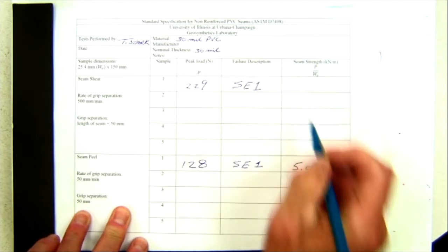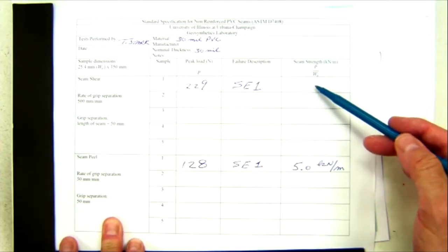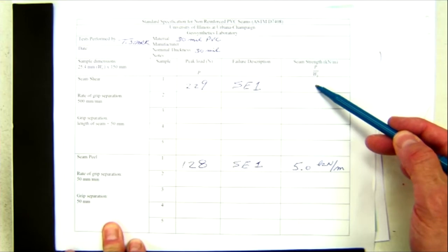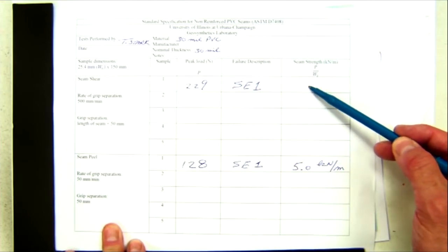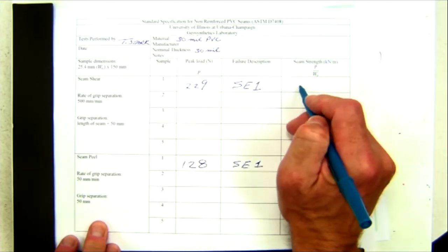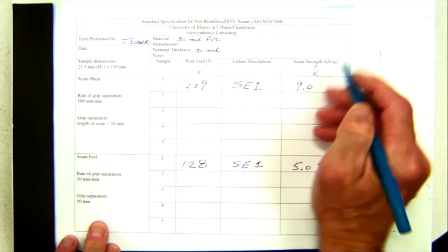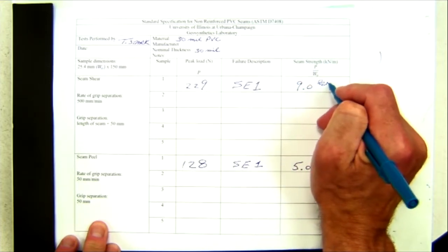And then the seam shear strength in shear is calculated by taking the peak load divided by the initial width of the specimen, which is 25.4 millimeters. That yields a seam strength of 9.0 kilonewtons per meter.